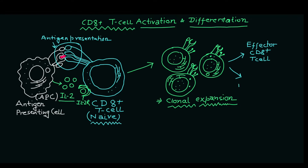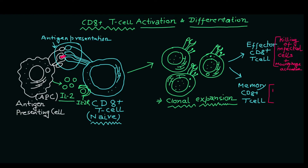The function of effector CD8 positive T cells is to kill infected cells — it can be virus infected or bacteria infected cells. It can also activate macrophages. The function of memory CD8 positive T cells is to keep the memory of that particular pathogen so that if it enters again, it can reactivate quickly.